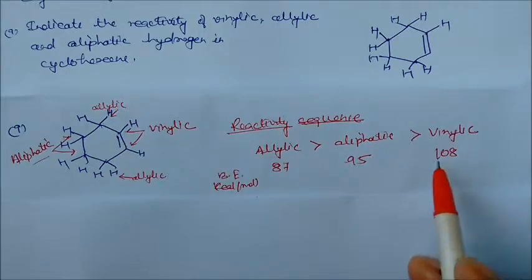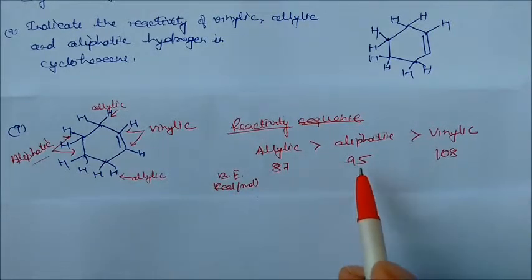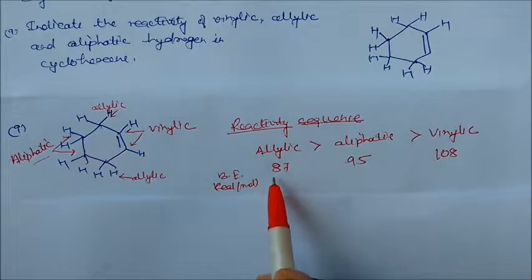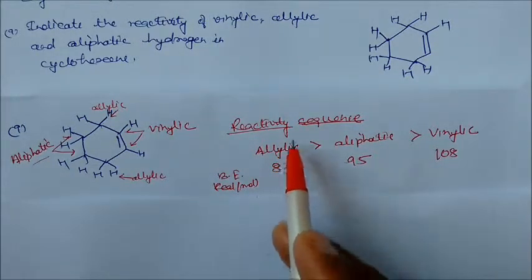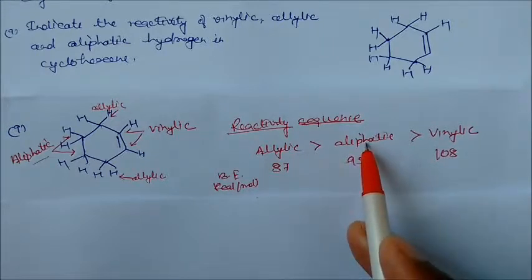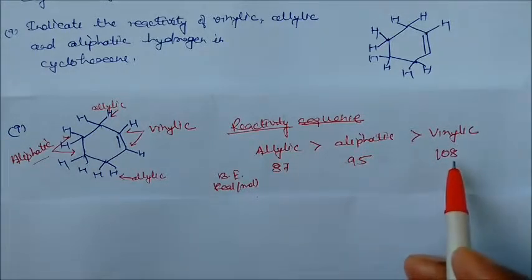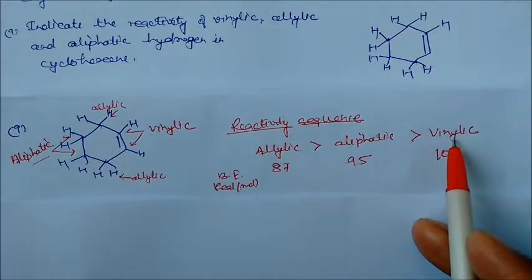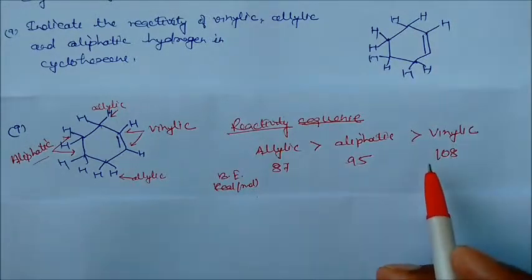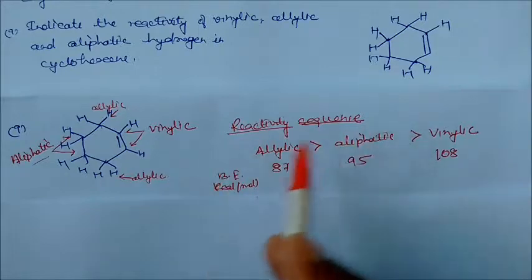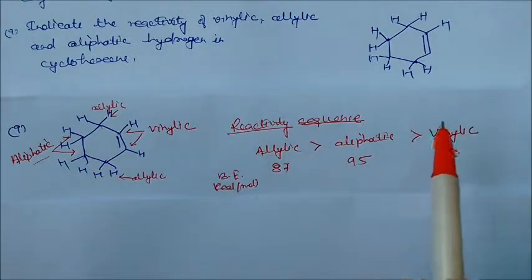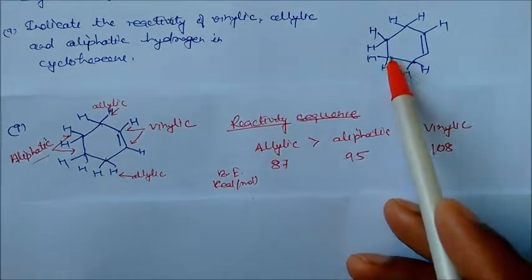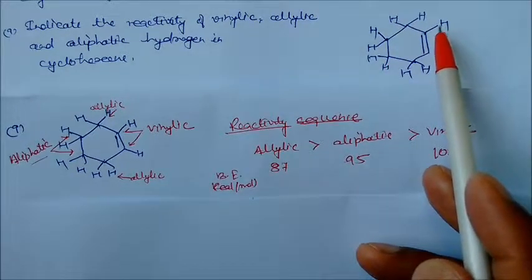Bond energy determines reactivity: lower bond energy means higher reactivity. Allylic C–H has the lowest bond energy and is most reactive. Vinylic C–H has the highest bond energy — 108 kcal/mol — and is least reactive. So the reactivity sequence is: allylic > aliphatic > vinylic, with vinylic hydrogen essentially not reacting under these conditions.